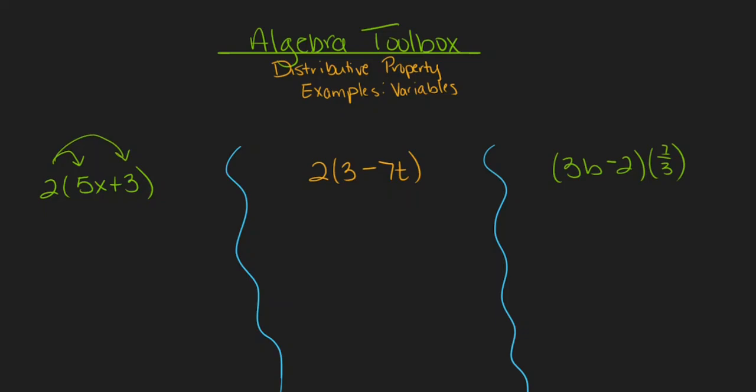So I can think of this really as 2 times 5x plus 2 times 3. I can simplify each of those multiplication problems by turning the 2 times 5x into 10x and the 2 times 3 into 6. I still have addition between these two, so I can write this as 10x plus 6.